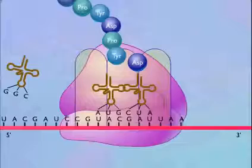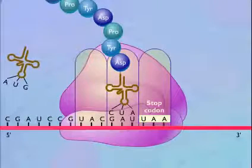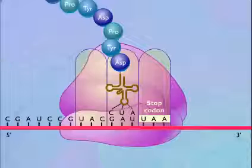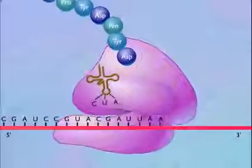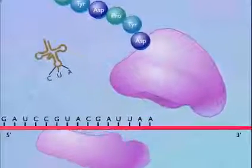Elongation of the polypeptide is terminated when a stop codon moves into the A-site. A stop codon does not specify an amino acid and does not have a corresponding transfer RNA. The ribosome dissociates into the 30S and 50S subunits, and the messenger RNA and protein are released.